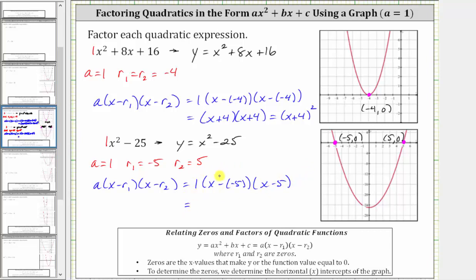we can leave off the one, x minus negative five becomes x plus five, and then we have times the quantity x minus five. This is the factored form of the given quadratic expression.